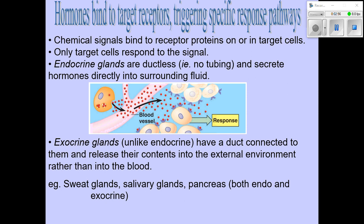Hormones are chemical signals that need to bind to receptor proteins. Sometimes these receptor proteins are on the cell, sticking out of the cell membrane, kind of like those receptor channels for neurotransmitters. But in other cases, the receptor might actually be inside the target cell, so the hormone has to travel through the plasma membrane and into the cell first. So once again, it's only going to be the target cells that are going to respond, and what we are talking about here are endocrine glands.